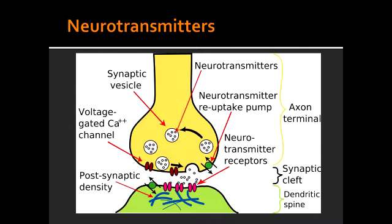What condition causes an increase in dopamine? Increase in dopamine happens in schizophrenia. What condition causes a decrease in dopamine? Dopamine is decreased in Parkinson's and in depression. Dopamine synthesis occurs in the ventral tegmentum and in the substantia nigra, which is in the midbrain.